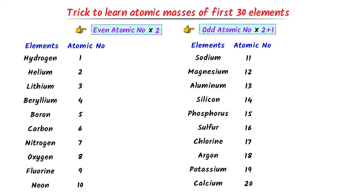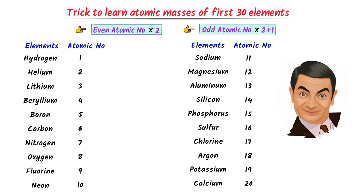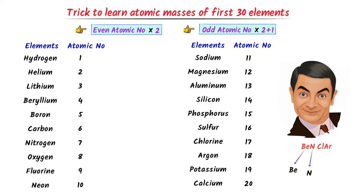We cannot apply these two tricks on four elements. In order to remember these four elements, consider Mr. Bean. I write BEAN color: Be stands for beryllium, N stands for nitrogen, Cl stands for chlorine, and Ar stands for argon. I put a star on these four elements. Except these four elements, we can easily apply these two tricks on the first 20 elements of the periodic table.